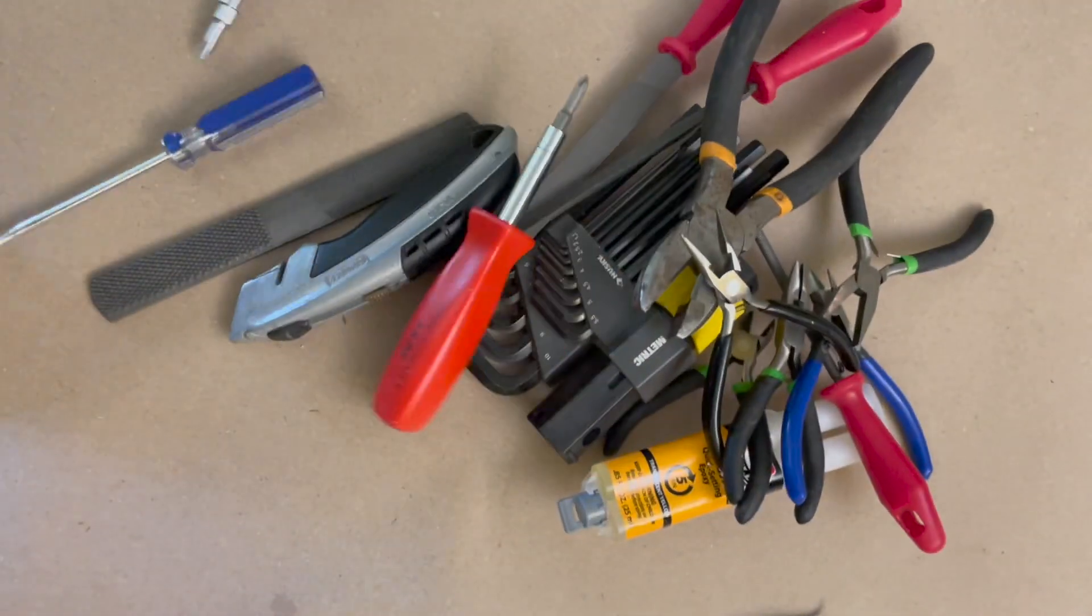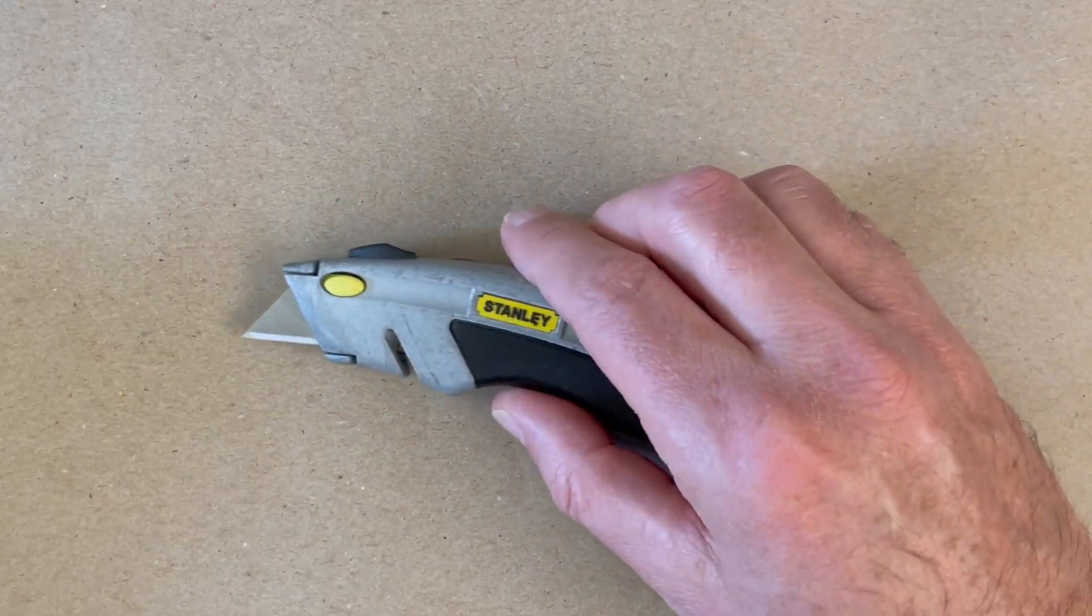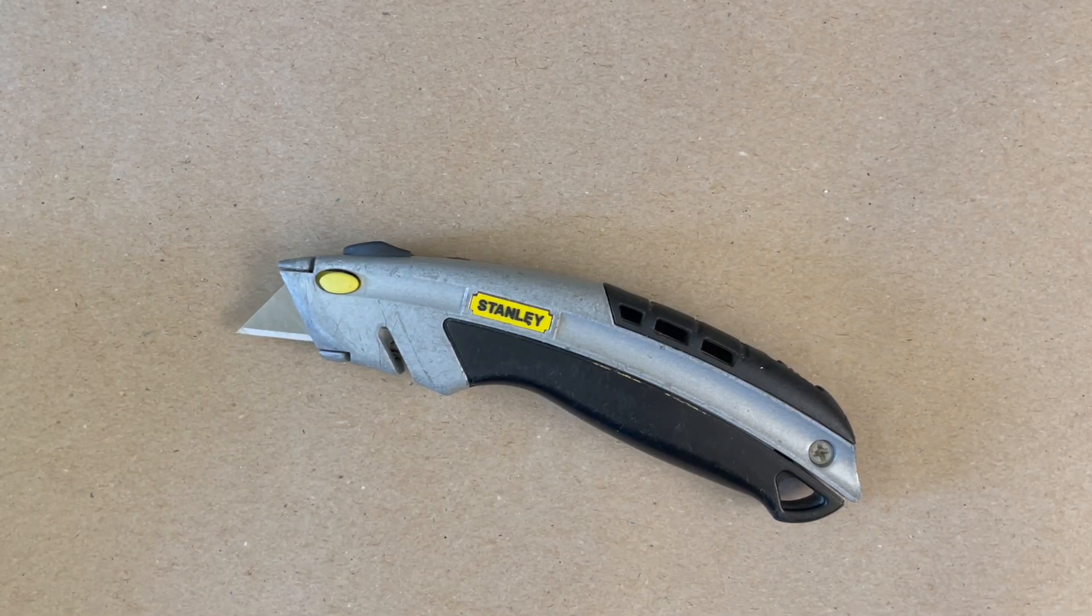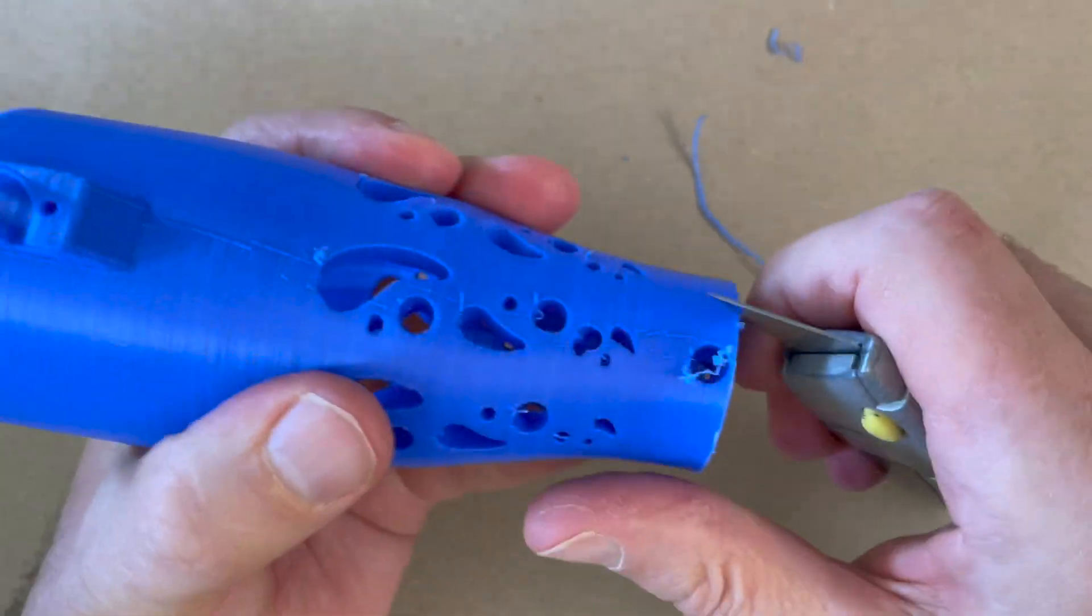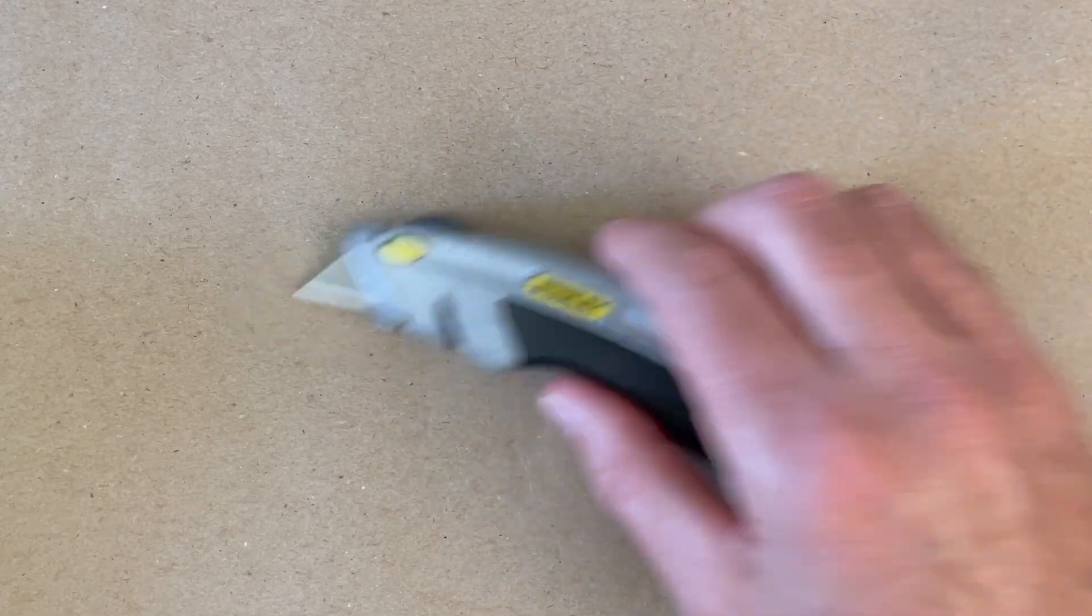But first we're going to have to clean all these parts. I'm going to go through the various tools that I tend to use to do the cleaning. My favorite tool is the utility knife. This thing is really useful to scrape parts, clean parts, cut parts. It's my primary tool.